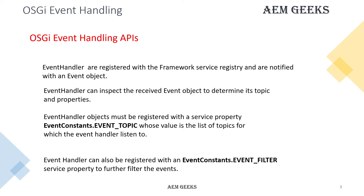Now let's understand how you define what kind of event this event handler will be listening to. There is a property called event topic. You can add this property under the @Component annotation and define in event topic what kind of event it will listen to. If you want to listen to events under a particular path, you can achieve that using another property called event filter. Apart from path, you can add other filters as well.